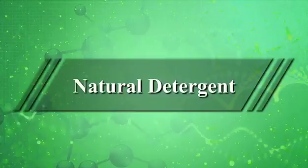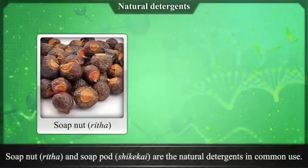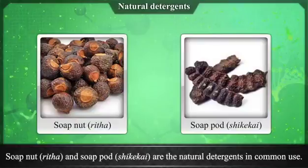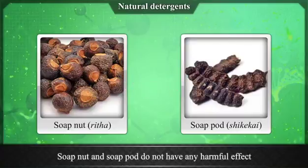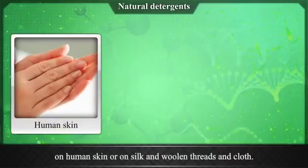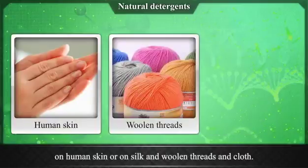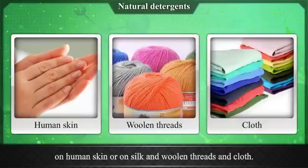Natural detergents: soap nut (rita) and soap pod (shikakai) are the natural detergents in common use. They contain a chemical called saponin. Soap nut and soap pod do not have any harmful effect on human skin or on silk and woolen threads and cloth.